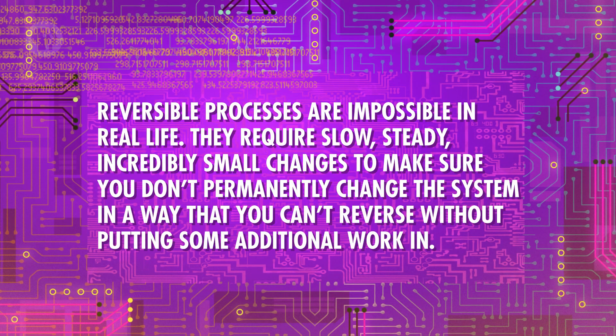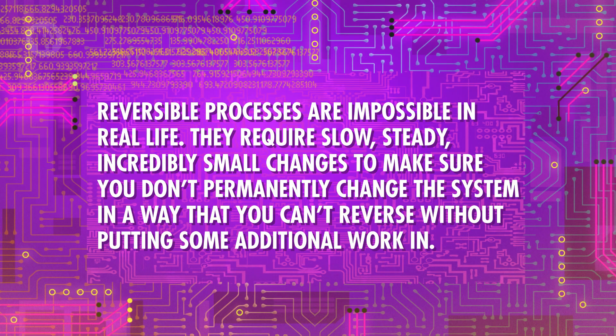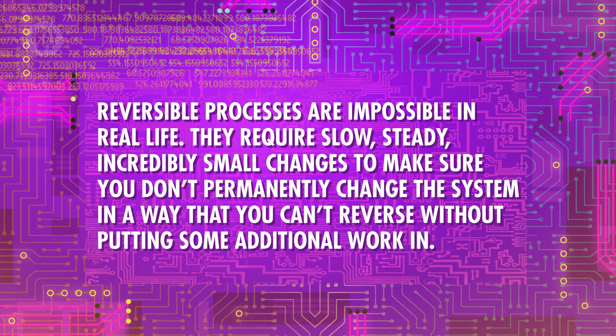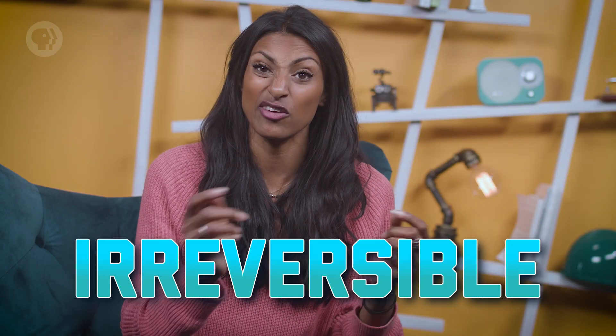Reversible processes are impossible in real life. They require slow, steady, incredibly small changes to make sure you don't permanently change the system in a way you can't reverse without additional work — which would require an infinite amount of time. So in the real world, all processes involving work are irreversible. They can be reset to some extent, but you need to put in a bit of extra effort to get there. A reversible process is more like the best-case scenario — one you can get close to but never actually reach. In engineering, it's not so much about whether a process is reversible, but how reversible it is. The closer you can get to reversibility, the more efficient and optimal the process will be.